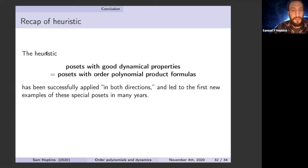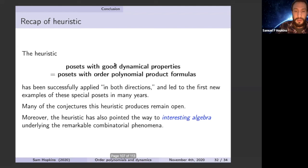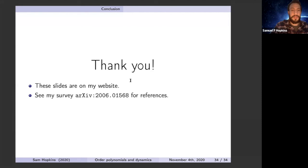In conclusion: this heuristic — posets with good dynamical properties equals posets with order polynomial product formulas — can be used in both directions to find new examples. There are not many examples of either class, so finding new ones is interesting. Many conjectures remain open. There's a survey paper on this heuristic with about seven cyclic sieving conjectures. These results also point toward interesting algebra underlying: connections to representation theory suggest that your poset means something algebraically. These slides are on my website and the arXiv references the survey papers.